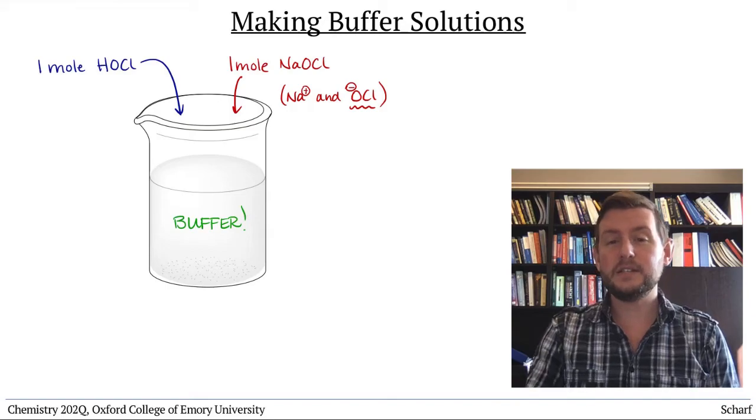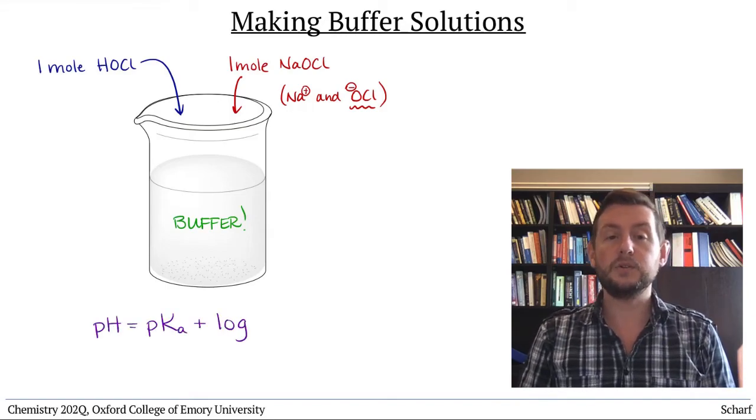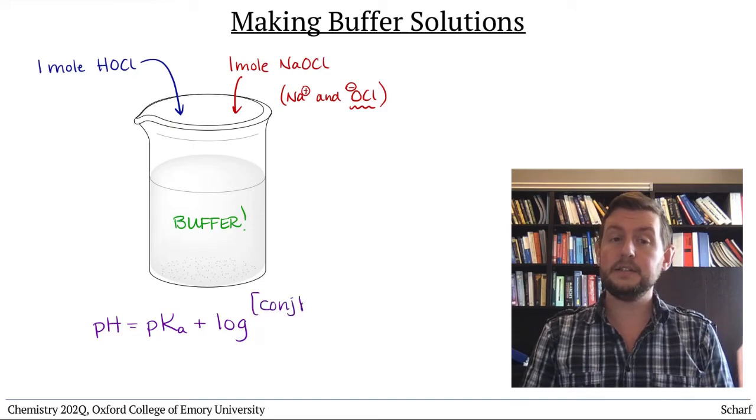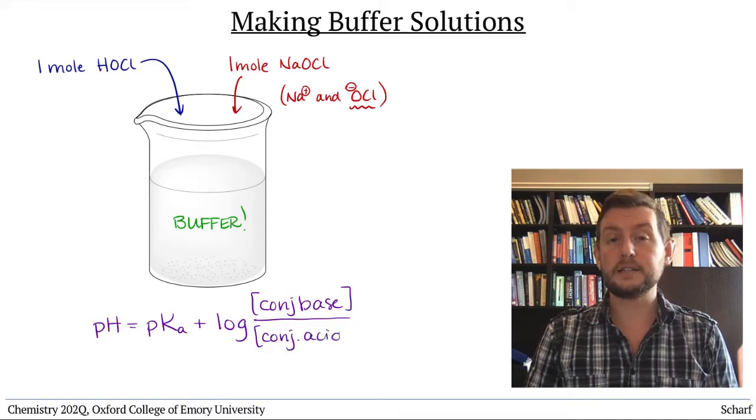The pH of the buffer solution is determined by the Henderson-Hasselbalch equation: pH equals the pKa of the conjugate acid plus the log of the conjugate base concentration over the conjugate acid concentration.